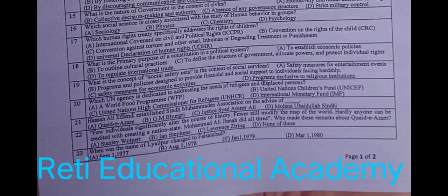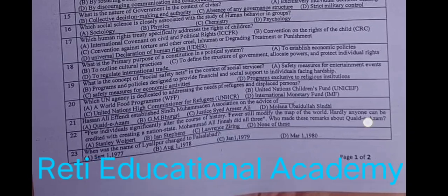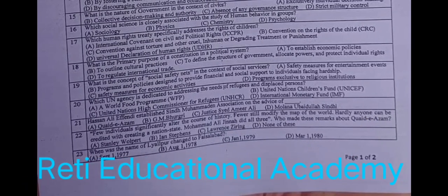Question number twenty-two: Muhammad Ali Jinnah did all three — who made these remarks about Quaid-e-Azam? A. Stanley Wolpert, B. Anne Stephens, C. Lawrence Ziring, D. None of these. The correct answer is A, Stanley Wolpert, in the book Jinnah of Pakistan.